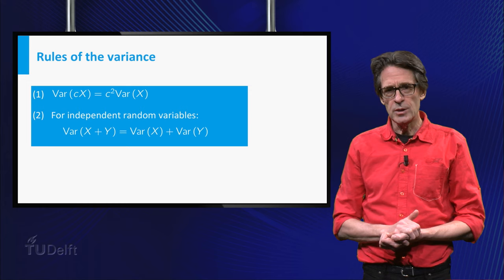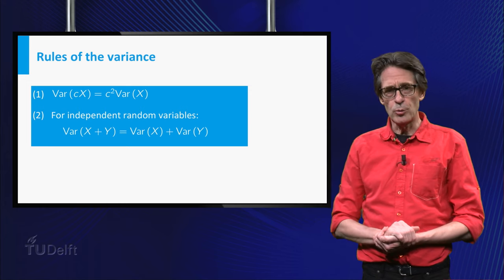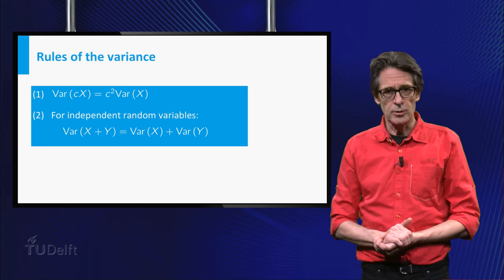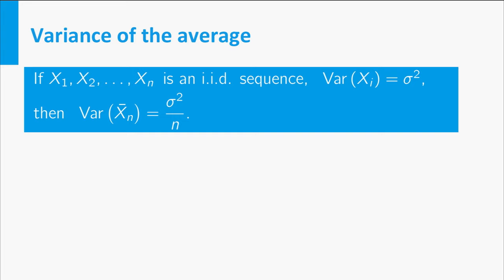For the variance we use the properties that you can see here. Note that for the sum rule the independence is important. We can then deduce that the variance of the average is equal to the individual variance divided by n.